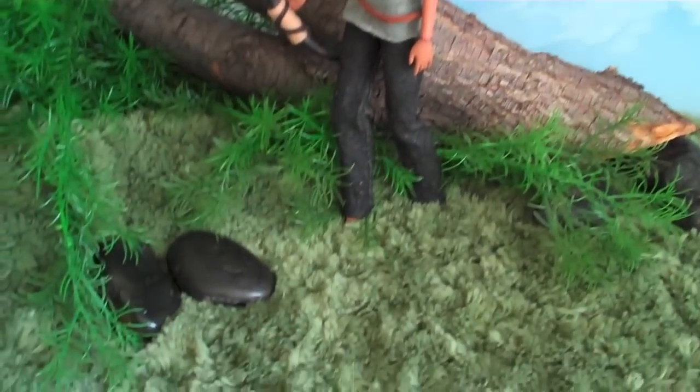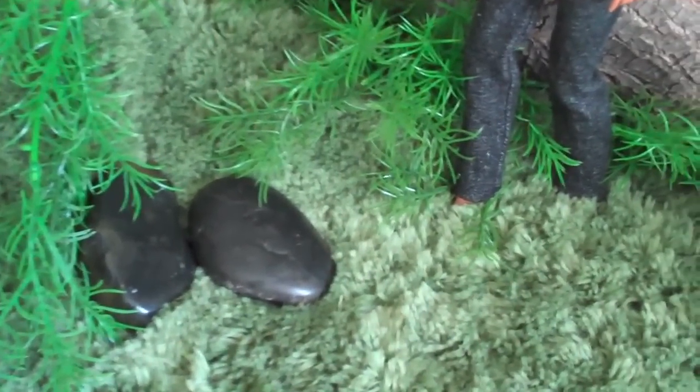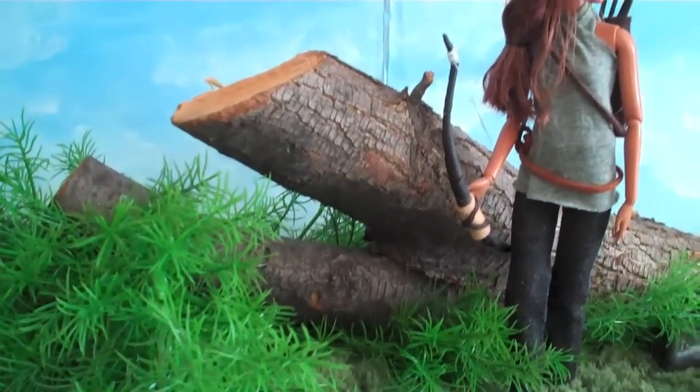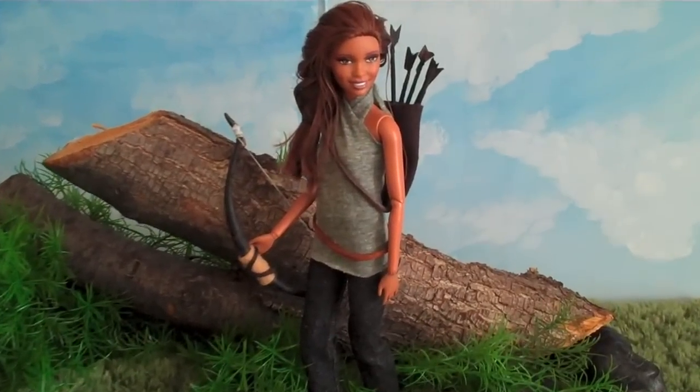And the grass is a green bathroom mat with a couple of stones on there for some added detail. A silk plant and a piece of a tree from my backyard helps to bring it all together. And that's pretty much it. See you later.